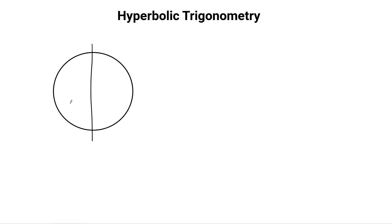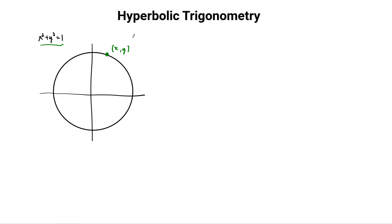Let's start with a unit circle and remind ourselves what the equation is: x squared plus y squared equals 1. Then let's choose a point on the unit circle - I'll pick one in quadrant 1. This point has x, y coordinates which satisfy this equation, x squared plus y squared equals 1.